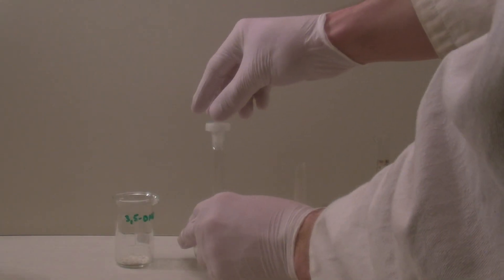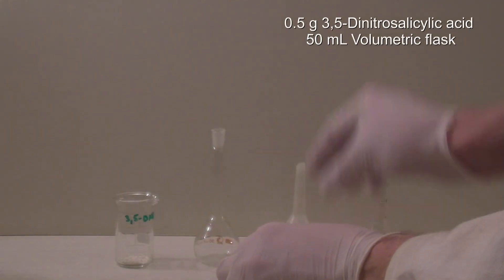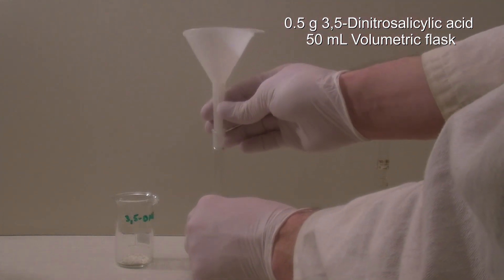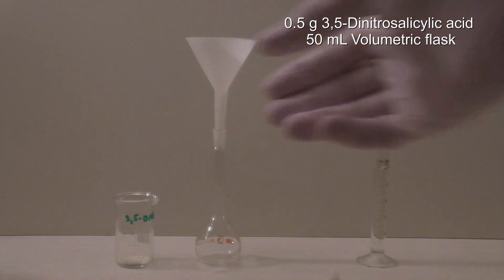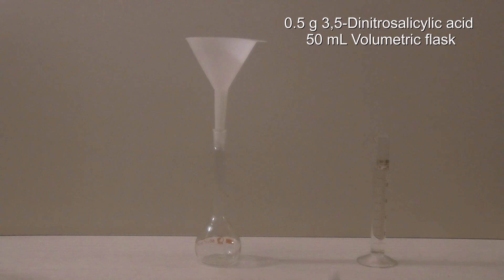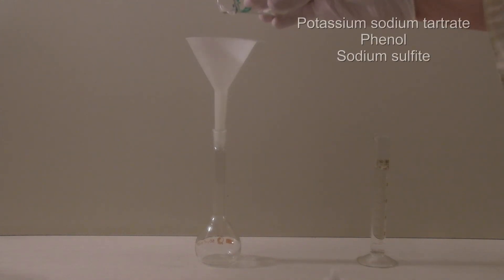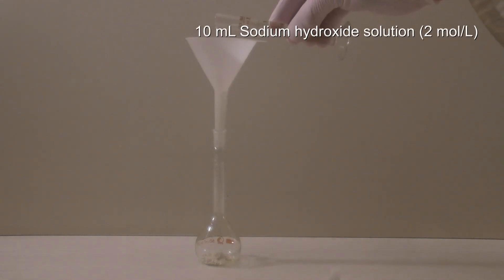To prepare the DNS reagent, 0.5 grams of 3,5-dinitrosalicylic acid are added to a 50 milliliter volumetric flask. In the lab more substances like potassium sodium tartrate, phenol and sodium sulfite are added to increase the stability and sensitivity of the reagent. To this, 10 milliliters of a 2-molar sodium hydroxide solution are added. The yellow sodium salt of the dinitrosalicylic acid is formed immediately.